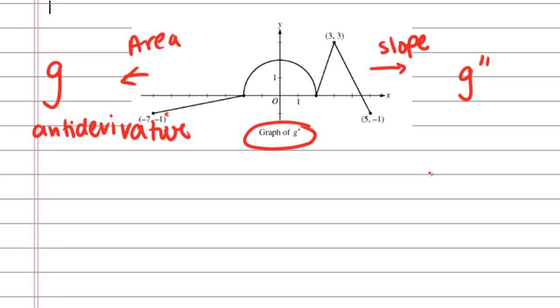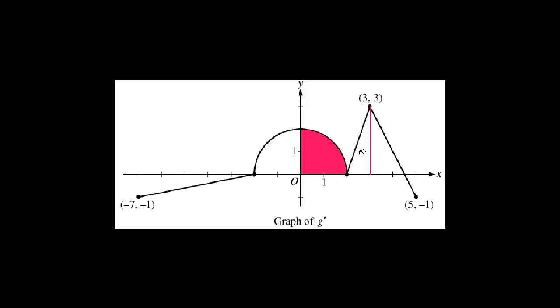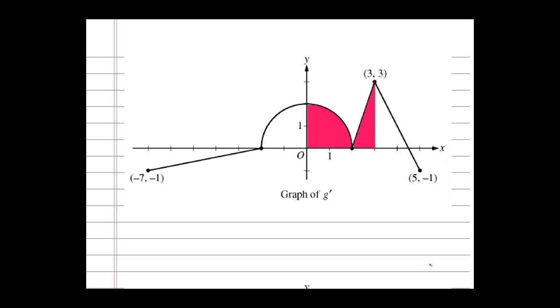For this particular question, what they're looking for in part A is for you to find g of 3 and g of negative 2. So first, let me represent the area from 0 to 3 under our g prime graph here, which is highlighted in pink. Looking at it more closely, we're given a semicircle and a triangle, and so I want one-quarter of the area of a circle. So one-fourth times pi times 2 squared, and then we've got the area of that portion of the triangle, which is one-half its base, which is 1, and its height, which is 3. In other words, the pink quarter of a circle is the value of pi.